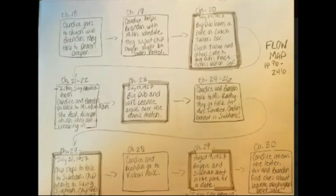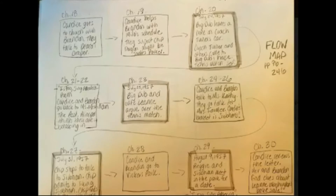Chapter 27, we jump back in time — Chip stops to talk to Siobhan. He admits to liking Siobhan a lot, and then finds out she doesn't like him in return — she likes Reggie. Chapter 28, Candace and Brandon go to Vickers Park, which is where the tennis match was held. Chapter 29, we jump back in history — Reggie and Siobhan meet in the park for a date, and again we have the poem 'I Too Sing America' by Langston Hughes referenced. Chapter 30, Candace reviews the letter. Feel free to mark that letter and go back because it has all the clues you need for solving the puzzle. Candace and Brandon find clues about Leanne Washington's bake sale and Briggs versus Elliot, which is linked in our interactive timeline.